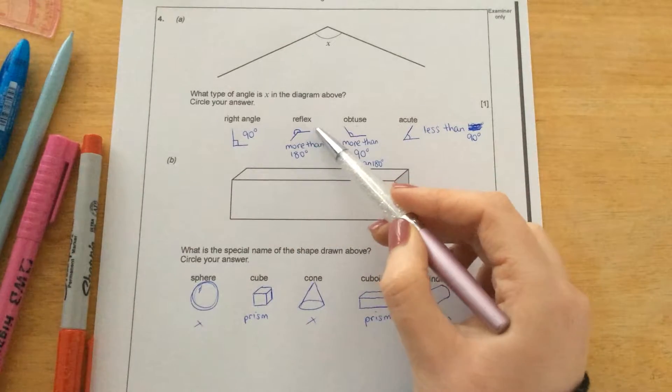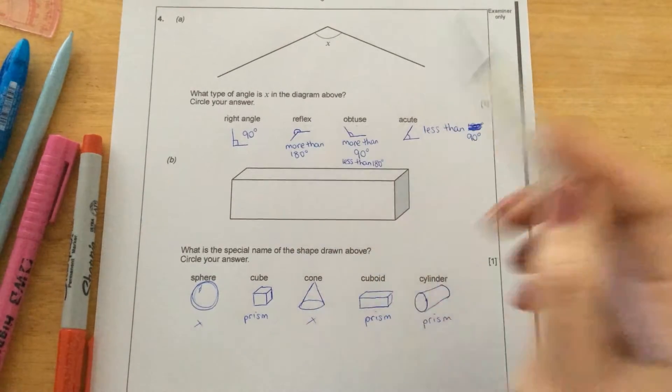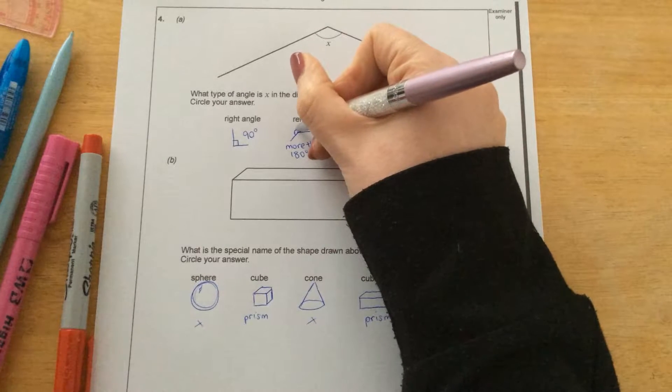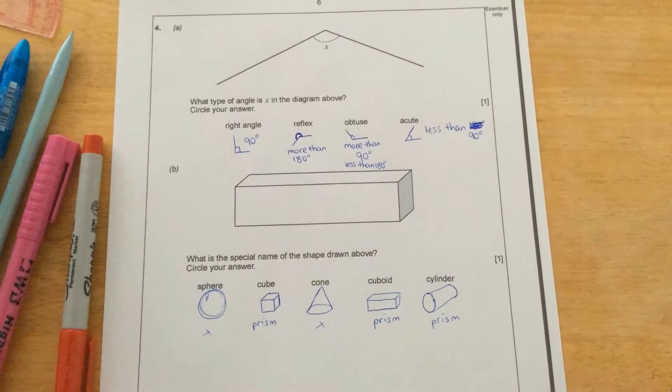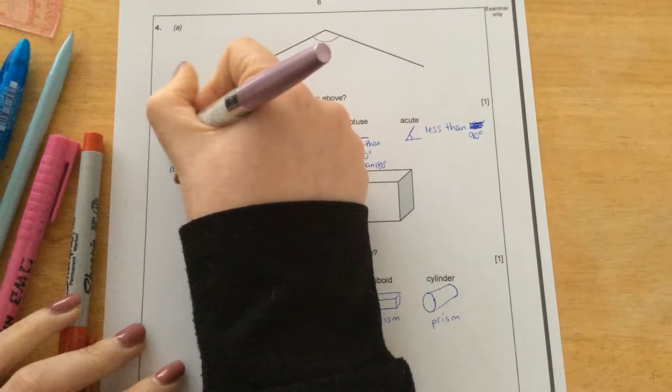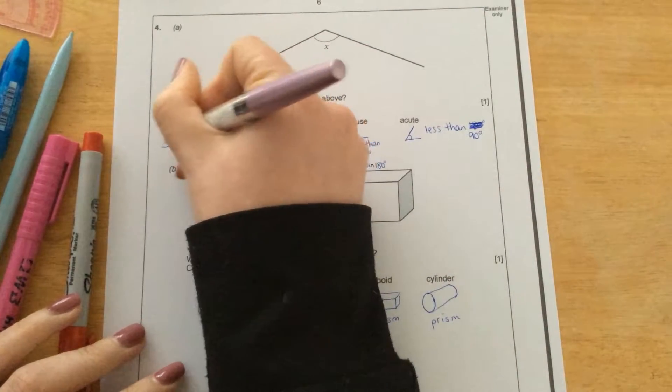A reflex angle is the really flexible angle, the one that sort of comes back on itself. So that's the outside there, so that is more than 180 degrees. So 180 degrees is represented by a straight line.